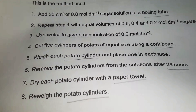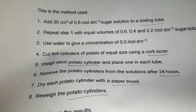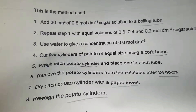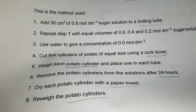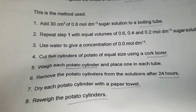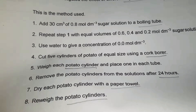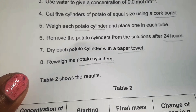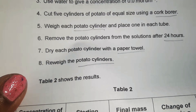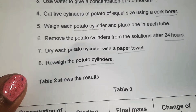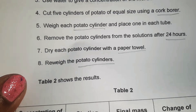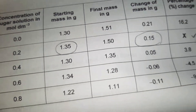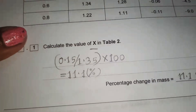This is the method used. Add 30 cubic centimetres of 0.8 mole sugar solution to a boiling tube. Repeat step one with equal volumes of 0.6, 0.4, and 0.2 mole sugar solutions, and use water to give a concentration of 0.0 mole. Cut five cylinders of equal size using a cork borer, place one in each tube, and remove the potato cylinders from the solutions after 24 hours. Dry each potato cylinder with a paper towel. Table 2 shows the results.